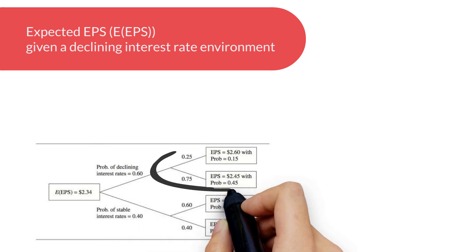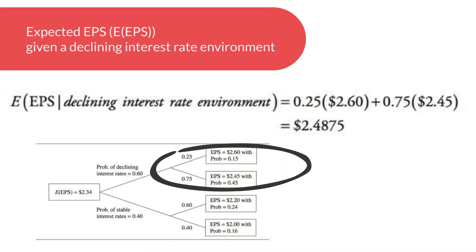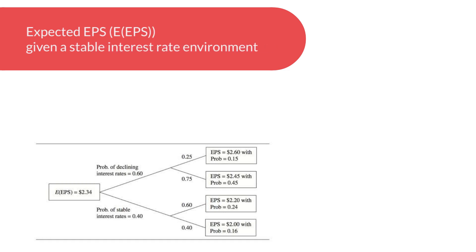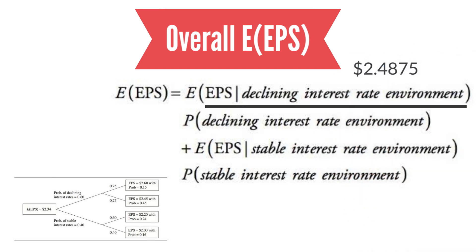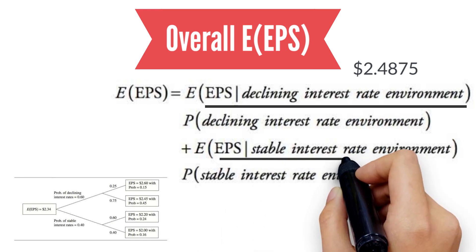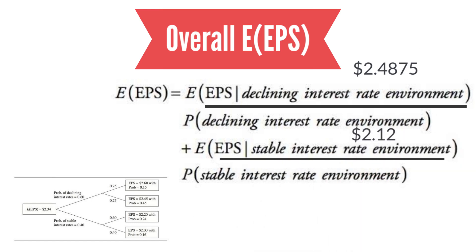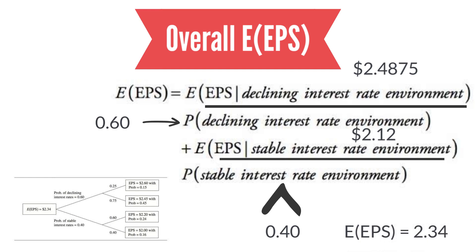We find the expected EPS given a declining interest rate environment, and similarly for a stable interest rate environment. Using the overall expected EPS equation: the expected EPS given declining rates is $2.4875, and given stable rates is $2.12. With a 60% probability of declining rates and 40% for stable rates, plugging in all numbers gives an overall expected EPS of $2.34.